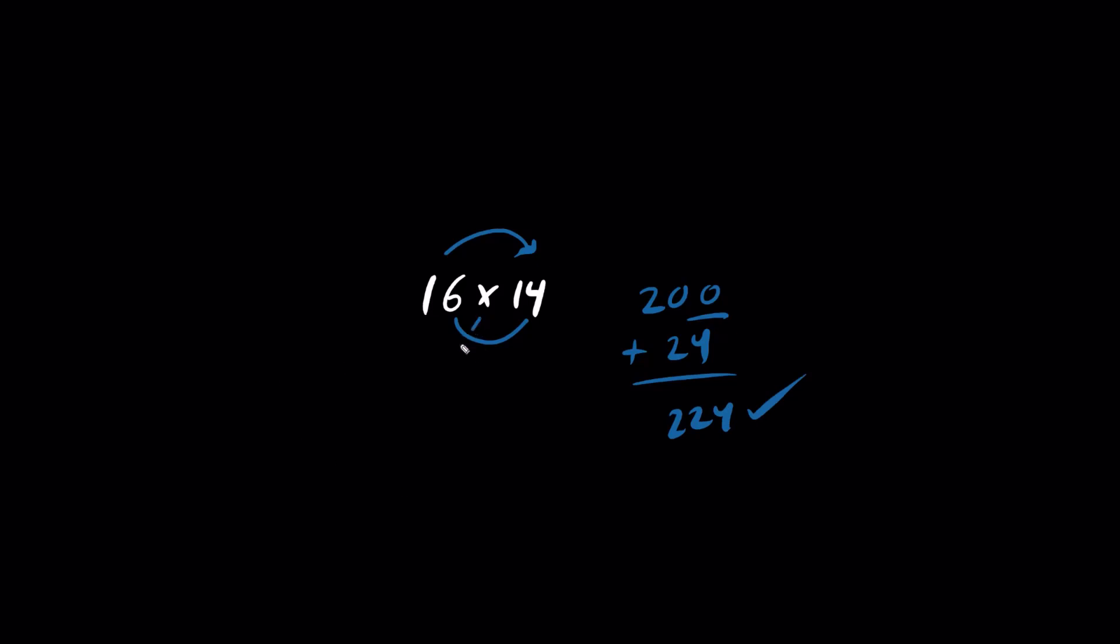By the way, we could also do middle number squared minus 1. 15 times 15 is 225 minus 1 is also 224.